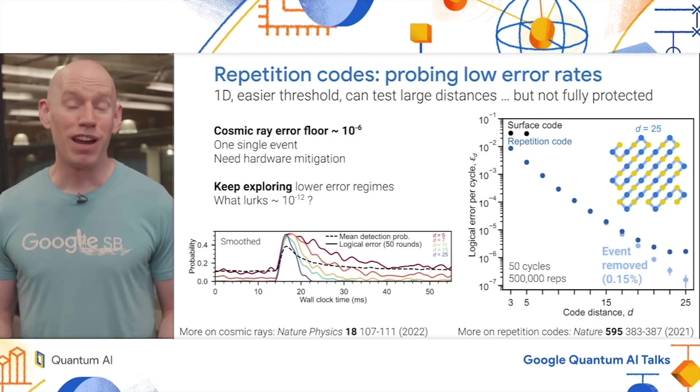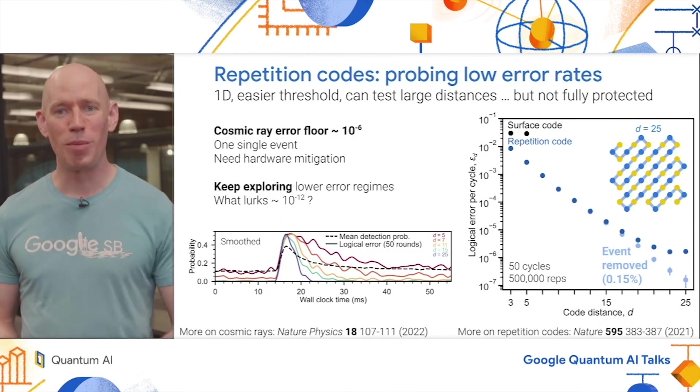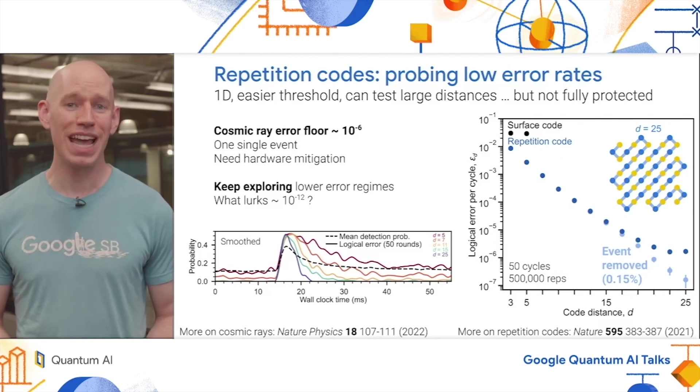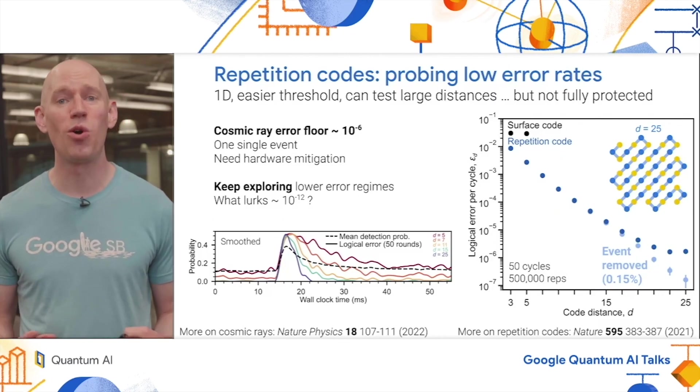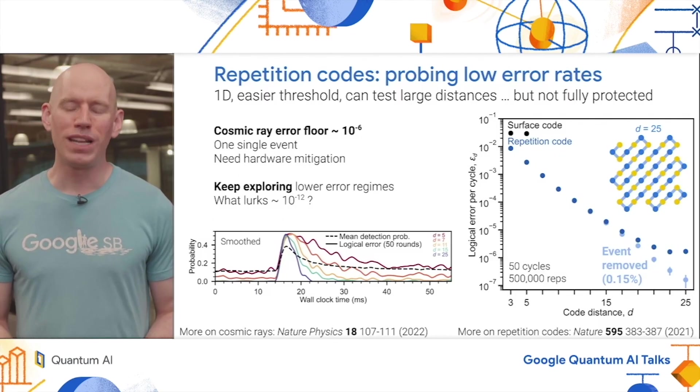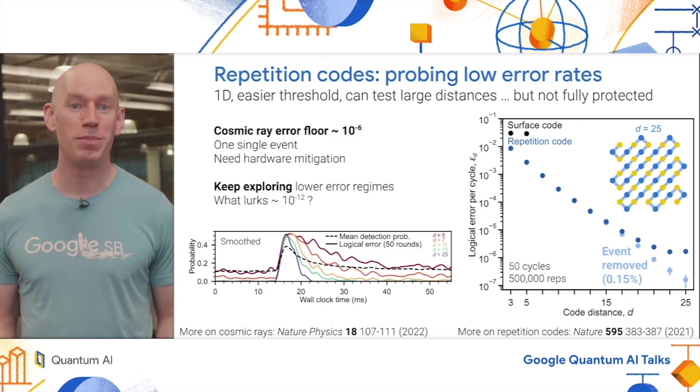These cosmic ray events are something that are very important to address with a hardware fix in order to get quantum error correction to work. We clearly need to keep exploring lower and lower error regimes to find, for example, what lurks at one part in a trillion. One last remark is it's kind of tricky to measure logical errors that are this small. We're looking at 25 million total cycles in that last data point and only a handful of logical errors that actually occurred.